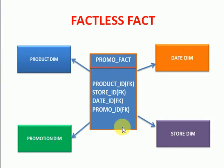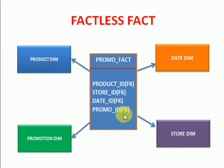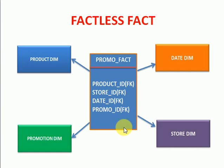Without fact measures, you can still get total promotions and the total number of products sold, and store-wise number of products sold. But in this fact table you can't see any measures — only foreign keys are available. This type of fact is called a factless fact. It is a fact table but there are no measures in this table.